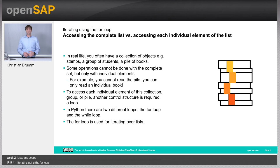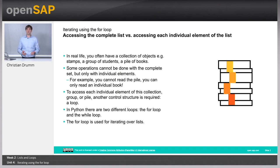In this week, we will learn how we can access a list of elements and work with each individual element. Consider real life — you often have a collection of objects, for example a group of students or a pile of books. There are certain operations you can't do with the whole group; for example, it's impossible to read a whole pile of books, you have to read each book individually. In order to access each individual element of a group, list, or sequence, a new control structure is required. This control structure in Python is called a loop.